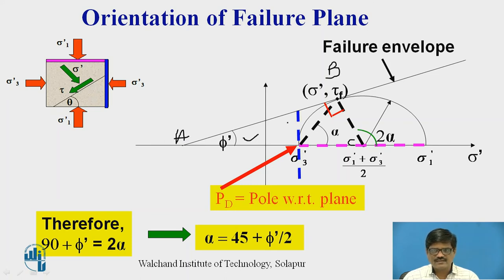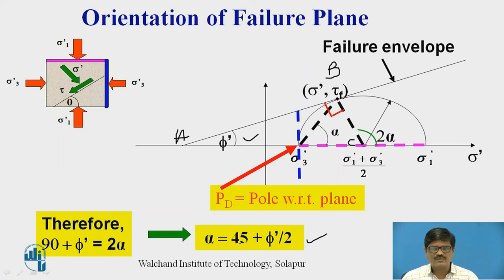Considering triangle A, B, C at the centre, 2 alpha is an exterior angle, which equals the sum of the two opposite interior angles. One interior angle is phi, and the other is 90 degrees because it is perpendicular to the failure envelope. Therefore, phi + 90 = 2 alpha, giving alpha = 45 + phi/2. So the inclination of the failure plane is 45 + phi/2.